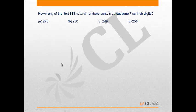In this problem, we have to find the number of numbers out of the first 883 natural numbers that contain at least one 7 as their digits.